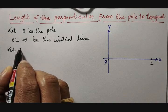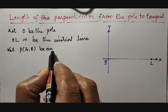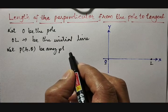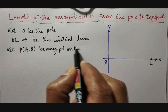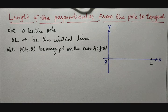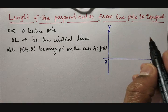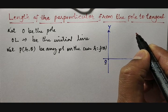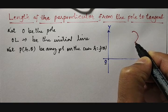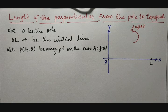Then let us take P of (r, θ) as any point on the curve r = f(θ). We need a curve here in polar form whose equation is r = f(θ). I will be taking one curve, and its equation is r = f(θ).